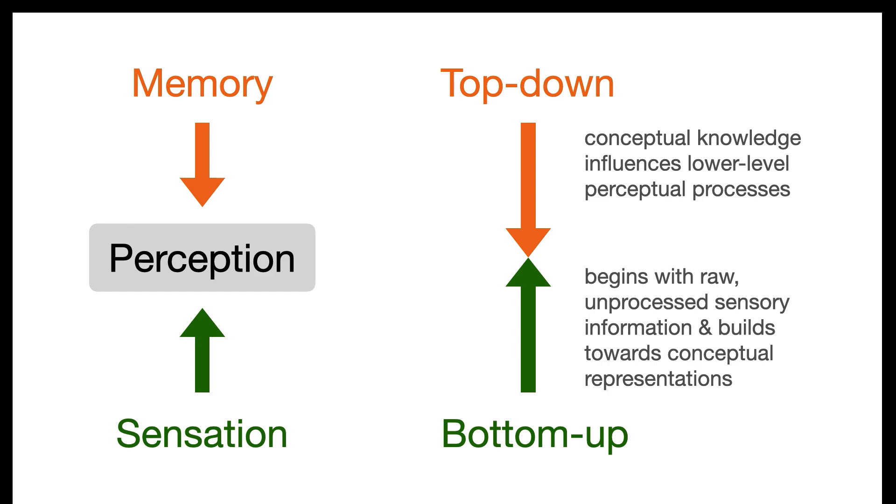Top-down processing is when conceptual knowledge, what we already know, what we have in memory, influences the processing and interpretation of lower-level perceptual processes. We saw that with the Dalmatian image.